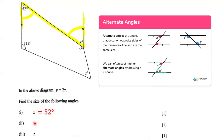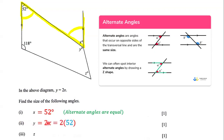Next, we have to determine the size of angle y. What do we know about angle y? Well, y is equal to 2x. Since x is equal to 52 degrees, we substitute that in and we have y is equal to 2 times 52. So y is equal to 104 degrees.